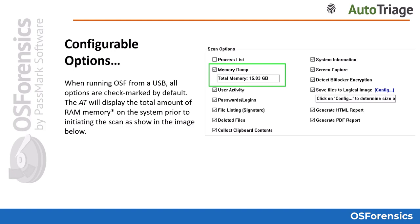Just like with the logical image, OS Forensics will tell you how much RAM is installed on the system before you initiate the scan. Creating a full memory dump can be a time-consuming process depending on factors such as the amount of RAM, in addition to the type of USB device and port being utilized. If you decide to collect a memory dump, please make sure you have sufficient space on your USB device, as the dump file will be the same size as the total memory displayed. For example, a computer with 16 gigabytes of RAM would generate roughly a 16 gigabyte memory dump file. It is highly advised to utilize a fast USB port such as 3.0 or 3.1 when collecting a memory dump for optimal speeds.